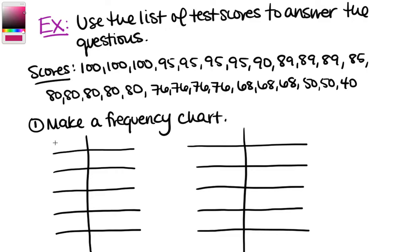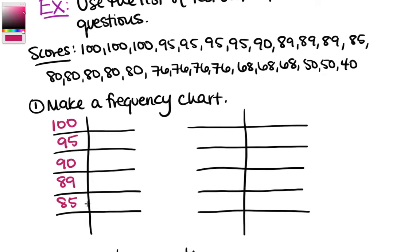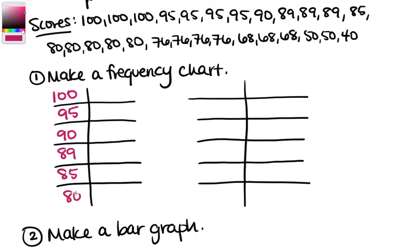For the frequency chart, every score that appears is going to be on the left side: 95, 90, 89, 85, 80, and then 76, 68, 50, and 40. We have a couple of extra spaces we just won't use. On the right side of the frequency chart goes how many times that score appears in our list.